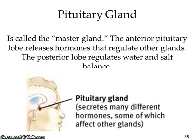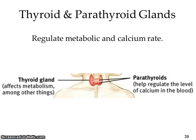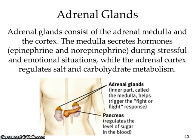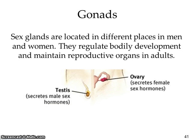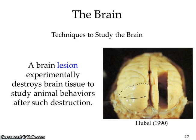The pituitary gland, known as the master gland, tells our body it's time to become an adult and initiates puberty. The thyroid and parathyroid relate to your metabolism, helping you burn calories. The adrenal glands consist of the medulla and cortex — the medulla secretes hormones like adrenaline and noradrenaline during stressful situations, while the adrenal cortex regulates salt and carbohydrate metabolism. Gonad sex glands regulate bodily development and maintain reproductive organs in adulthood.